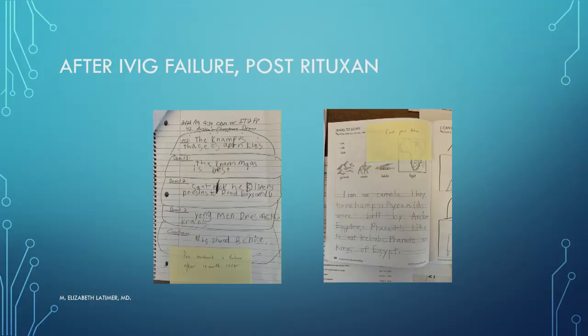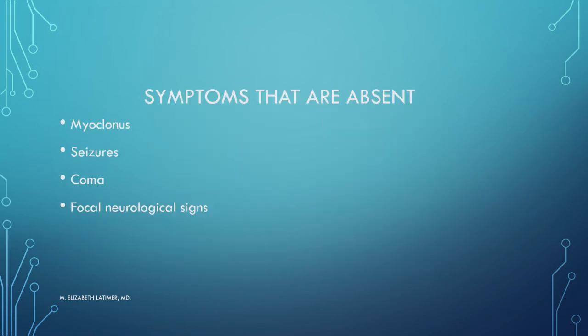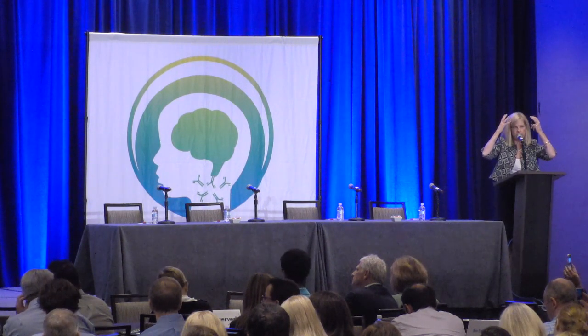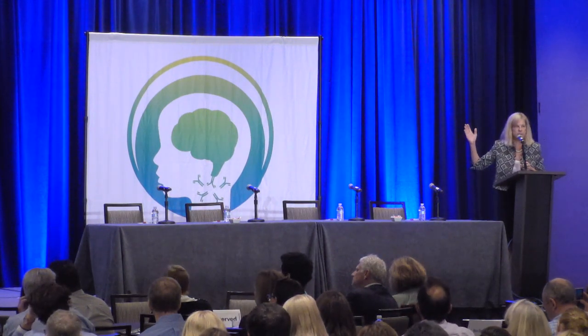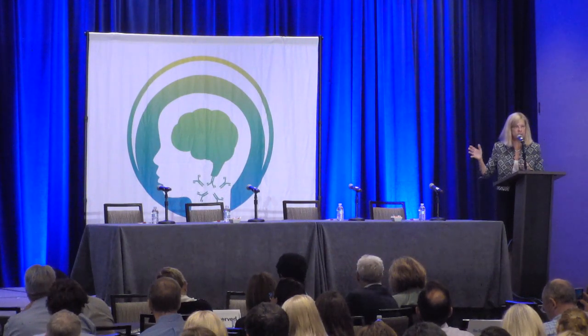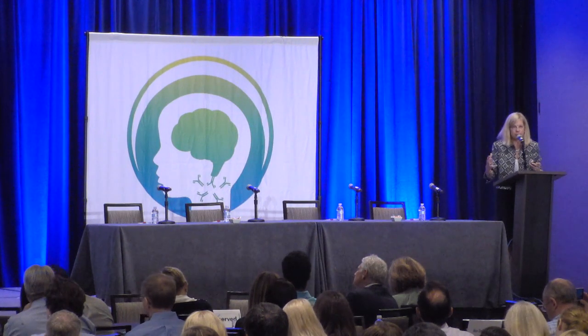This is a child who had failed after IVIG and then after rituximab obviously had much better handwriting. One thing you always have to know too is what's absent. These kids don't have seizures, they don't have myoclonus, they're not in a coma, and they don't have focal neurologic signs as if they had a stroke. So this is the deep gray matter of the brain that's involved. If they had these things, they'd be in the ICU in a coma getting treated. That's why you end up with this sort of walking wounded population that gets diagnosed with conversion disorder and child abuse, because it's not obvious to someone who doesn't know what this condition looks like.